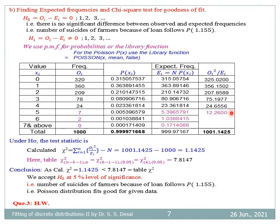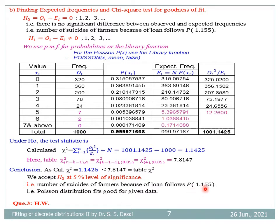After pooling there are 6 frequencies. The calculated chi-square = Σ(O_i²/E_i) − N = 1001.142 − 1000 = 1.142. The table chi-square for N − K − 1 degrees of freedom: N = 6, K = 1, so 6 − 2 = 4 degrees of freedom at 5% level of significance is 7.814. Since calculated chi-square (1.142) is less than table chi-square (7.814), we accept H₀ at 5% level of significance. That is, the number of suicides of farmers because of loan follows Poisson distribution with parameter 1.155.